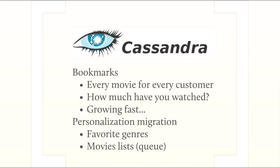We're also migrating a bunch of things from SimpleDB and S3-based backend systems. One of those is the favorite genres or that kind of personalization information. And the data which you typically know as the queue is basically moving to a more generalized movie list system that's based on Cassandra — fairly large data sets growing as people watch movies.